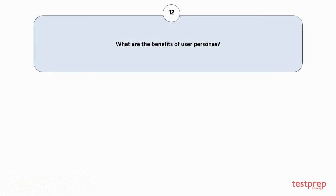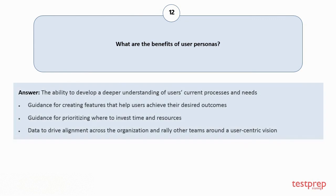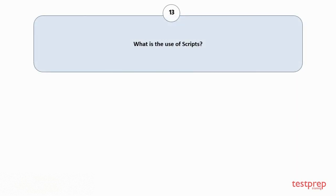Question number twelve: What are the benefits of user personas? One, the ability to develop a deeper understanding of users' current processes and needs; two, guidance for creating features that help users achieve their desired outcomes; three, guidance for prioritizing investment of time and resources; four, data to drive alignment across the organization and rally other teams around a user-centric vision.